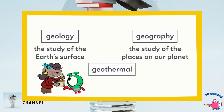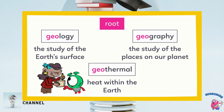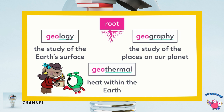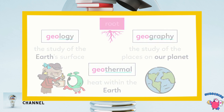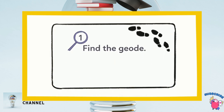All of these words have geo in them. Geo is a root — a word or part of a word that other words can grow from, like a tree. Roots don't usually stand on their own; they often need other word parts like -logy, -graphy, and -thermal to give them meaning. Look — they all mention earth or our planet, so we can guess that geo means earth. Back to our clue: to find the geode, let's look for something from the earth.